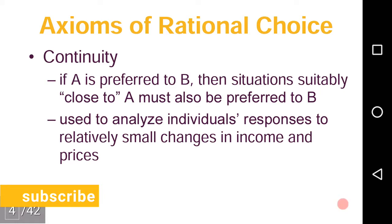Continuity is that if A is preferred to B, then situations suitably close to A must also be preferred to B. That if I prefer A to B, then if I am getting something that is just like A, close to A, not exactly equal to A but somewhat close to A, then I should prefer that option than B.